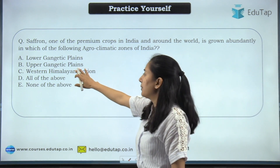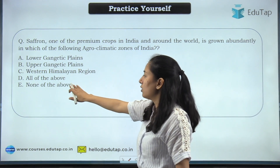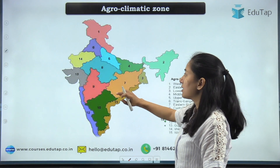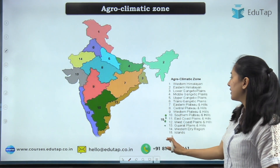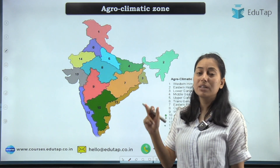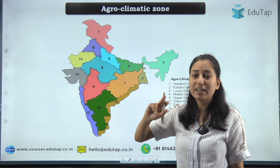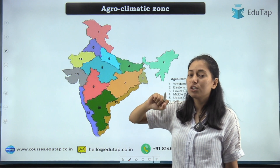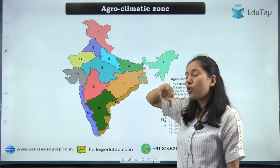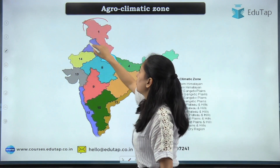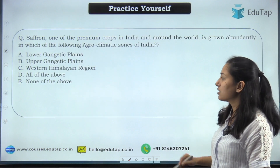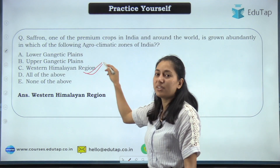The options were: lower Gangetic plain, upper Gangetic plain, western Himalayan region, all of the above, none of the above. We have discussed about 15 agro-climatic zones. Saffron is mostly found and cultivated in Jammu and Kashmir, which falls in the western Himalayan region. So the right answer for this question is western Himalayan region.